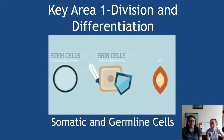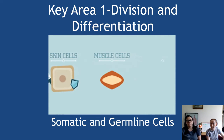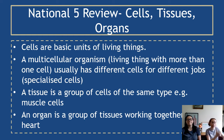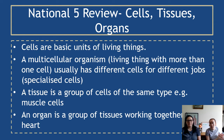This is the first section of key area one, which is going to be about somatic and germline cells. In terms of stuff you should know from National 5 - unless you're crash coursing, in which case I'd recommend BBC Bitesize or a textbook - you've learned that cells are the basic units of living things, and multicellular organisms are made up of more than one cell with different jobs.